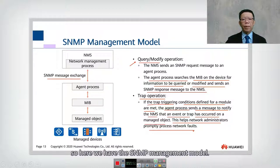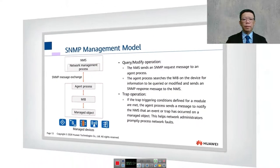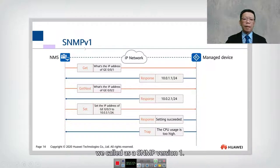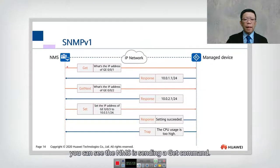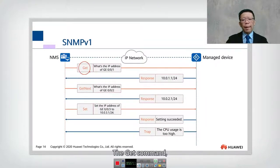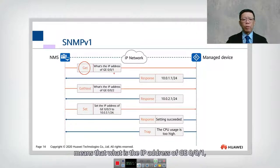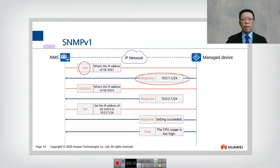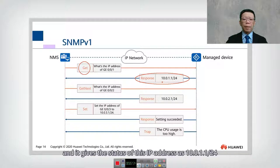So here we have the SNMP management model. Now in SNMP, we have different versions — three versions. This is the earliest version, SNMP version 1. In this conversation, you can see the NMS is sending a GET command. The GET command queries what is the IP address of G0/0/1. The managed device, upon receiving, is going to query the object. This GET command is also issued together with MIB.